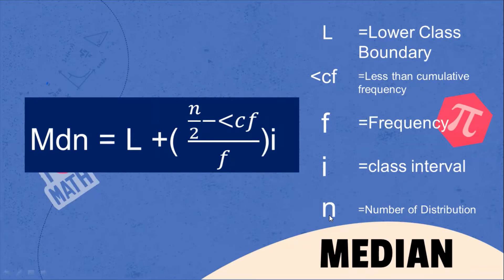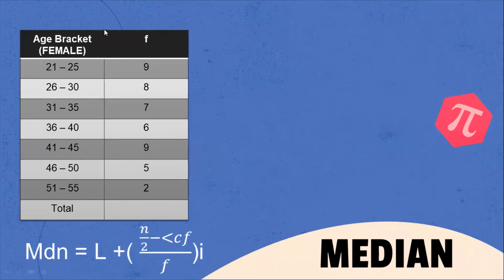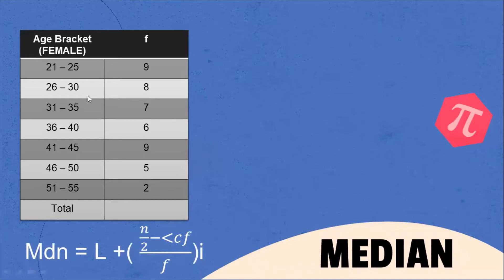Let's now apply this formula on the given example — the same data we used when we discussed the mean for grouped data. There are 9 females from 21–25, 8 from 26–30, 7 from 31–35, 6 from 36–40, 9 from 41–45, 5 from 46–50, and 2 from 51–55 years old.